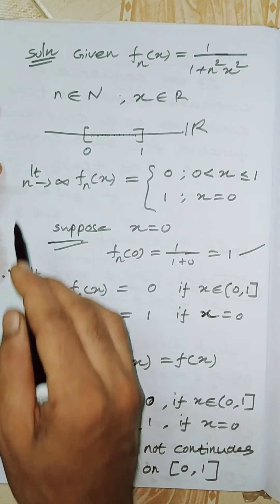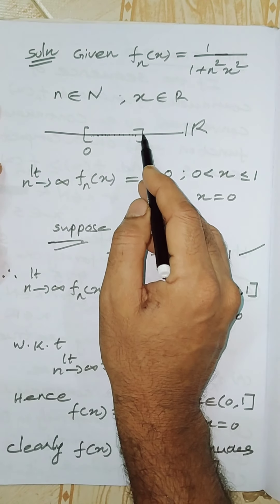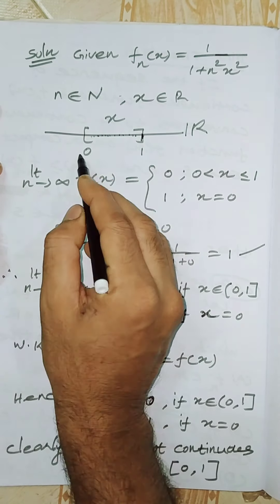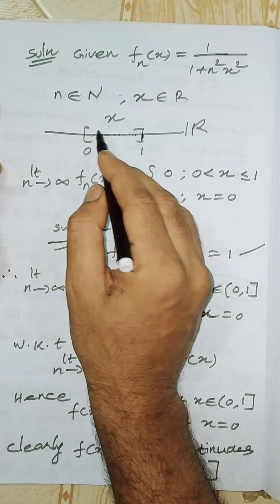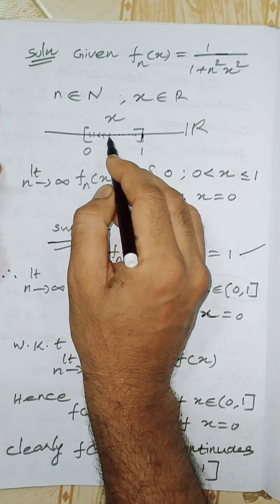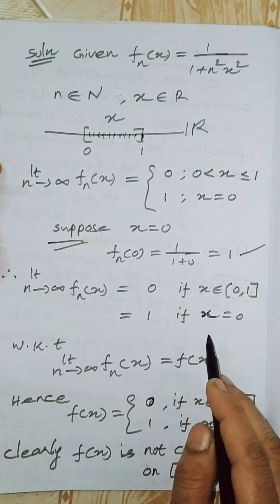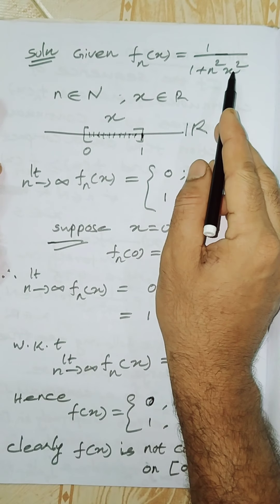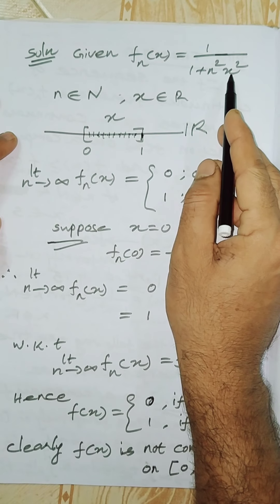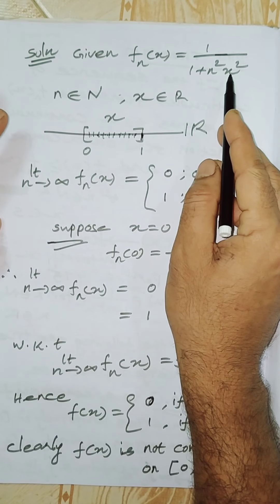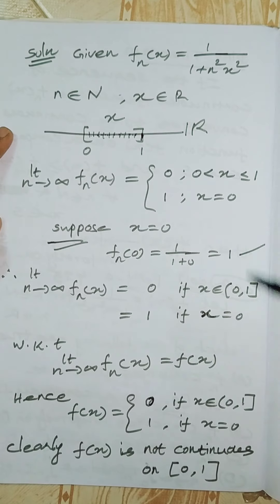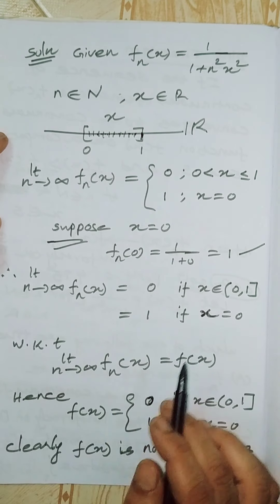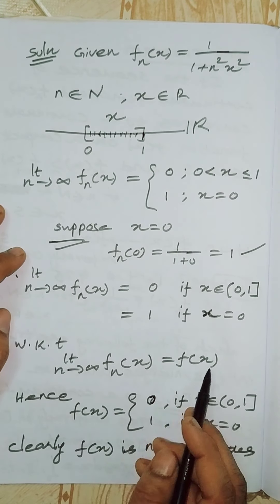At x equals 0 we get the limit equal to 1, and for the remaining points up to 1 we are getting 0. So the limit function f(x) equals 0 if x belongs to (0,1], and equals 1 when x equals 0. Clearly, checking continuity at x equals 0: the right-hand limit as x approaches 0 gives 0, but f(0) equals 1, so the limit does not equal f(0). Therefore f(x) is not continuous on the closed interval [0,1].